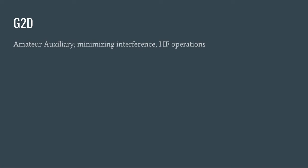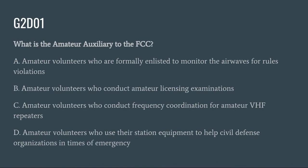G2D covers amateur auxiliary, minimizing interference, and HF operations. G2D01: What is the amateur auxiliary to the FCC? A. Amateur volunteers who are formally enlisted to monitor the airwaves for rule violations. B. Amateur volunteers who conduct amateur licensing examinations. C. Amateur volunteers who conduct frequency coordination for amateur VHF repeaters. Or D. Amateur volunteers who use their station equipment to help civil defense organizations in times of emergency. The correct answer is A: amateur volunteers formally enlisted to monitor the airwaves for rules violations.